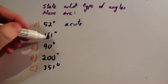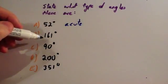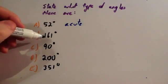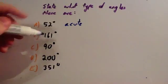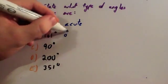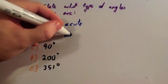161 degrees — well, that's bigger than 90 degrees but less than 180, so that is an obtuse angle.